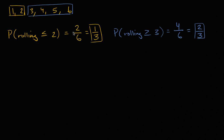If the probability is a larger number, the event is more likely. In this case the number is twice as large, so it's twice as likely.